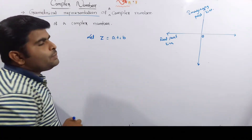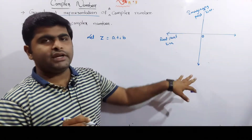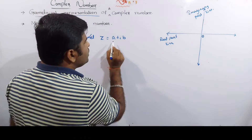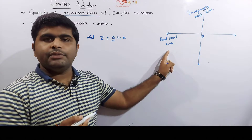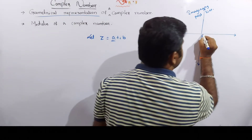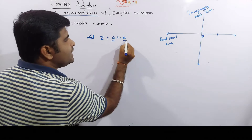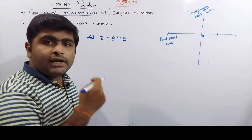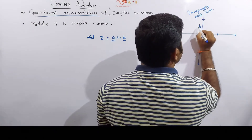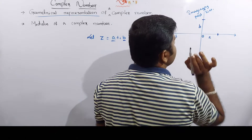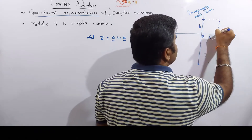If you have z equal to a plus ib, you can represent the complex number. If you have a value then you mark it along the real axis. Suppose the length along the real axis is a. If the b value is given, then you mark it along the imaginary axis. This is length a and this is length b, and the point represents the complex number.